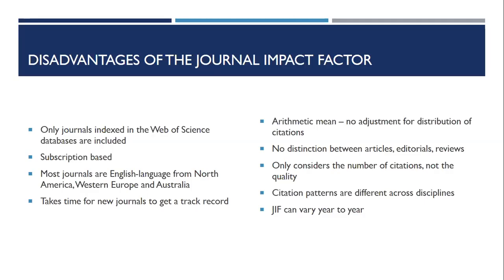You cannot compare impact factors across disciplines because citation patterns differ — mathematics articles tend to have very few references, while social science articles may have 50 or 60. Because the JIF uses only a two-year window, values can vary from year to year due to random causes, and smaller journals that publish fewer articles have a harder time generating a meaningful impact factor.